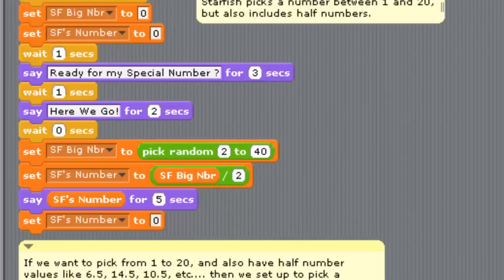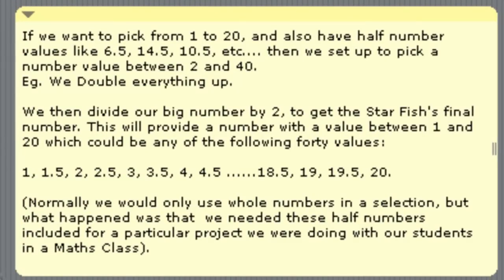Alright, so down in the comments of the code here we've tried to explain that. Basically, because we wanted to get in-between values, like values like 6.5, the way you get that value is if you could make the number 13 and then divide it by 2, you would get 6.5. So we doubled everything up so he picked numbers not between 1 and 20, but between 2 and 40. Then if you divide that answer by 2 and have him say the divided by 2 answer, you will get decimal values in between. Now it just so happened that in the maths game we were playing in maths class, we needed some decimal values to come up to determine some of the winners.